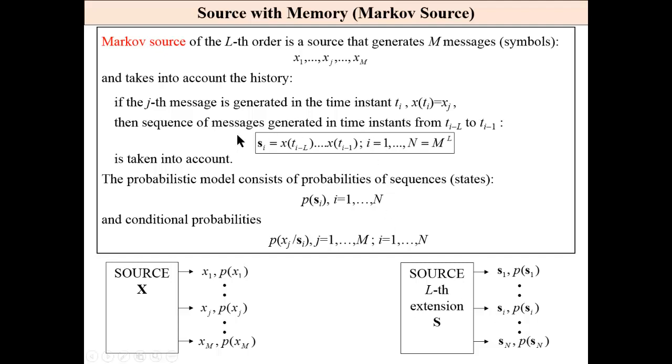These L messages generated before the given message create a sequence called the state of source with memory. We have M such states in source with memory. A probabilistic model is much more complex.